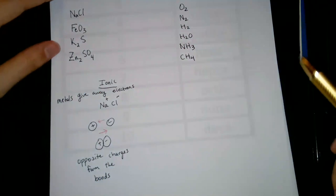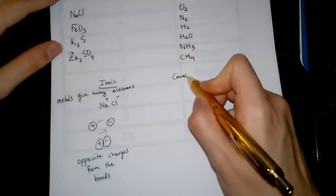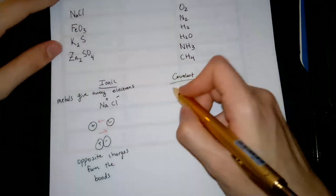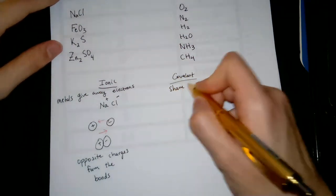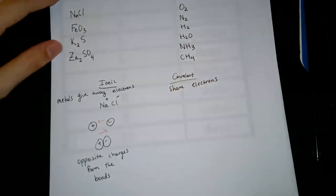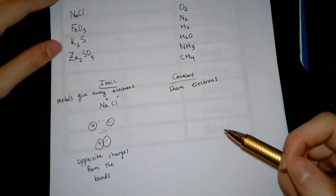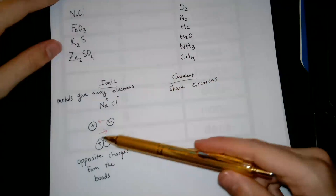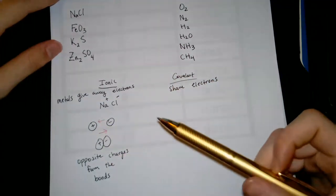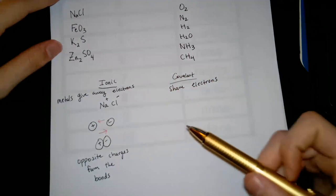And so with covalent, it's a little different. Turns out that they share electrons. With ionic, this opposite charge forms the bond. But we don't see that with covalence. We see something different.